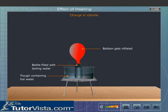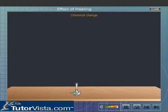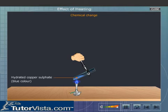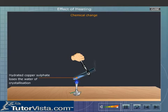Chemical change: Certain substances undergo chemical changes on heating. Here you can see the changes when blue-colored hydrated copper sulfate is heated. The copper sulfate loses its water of crystallization and forms white-colored anhydrous copper sulfate.